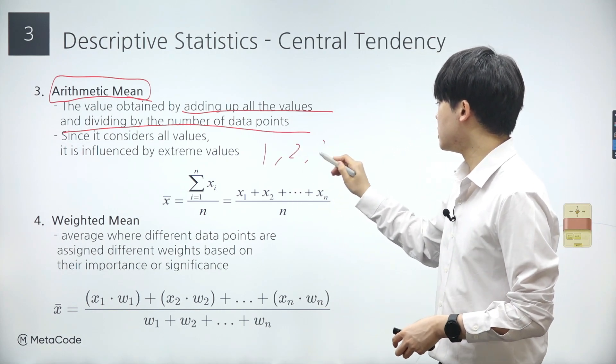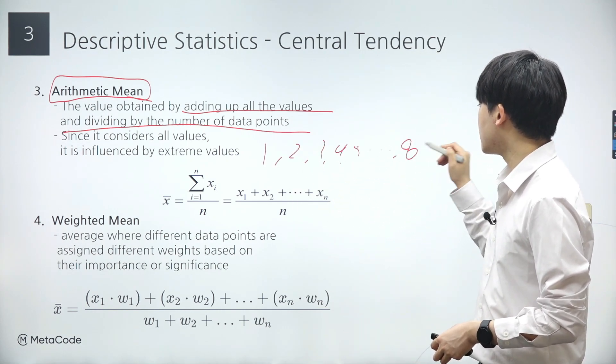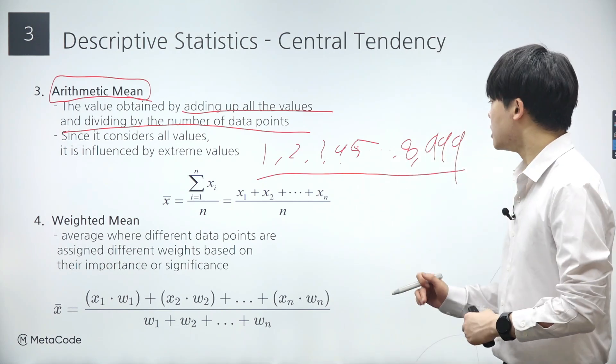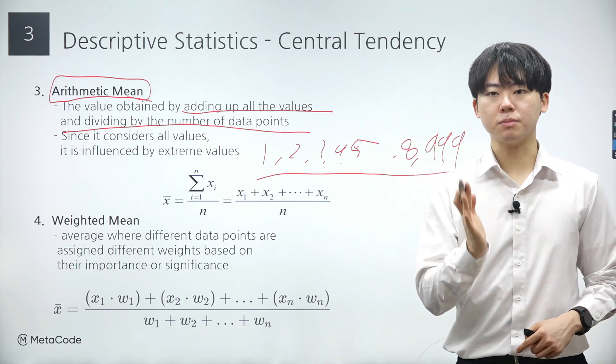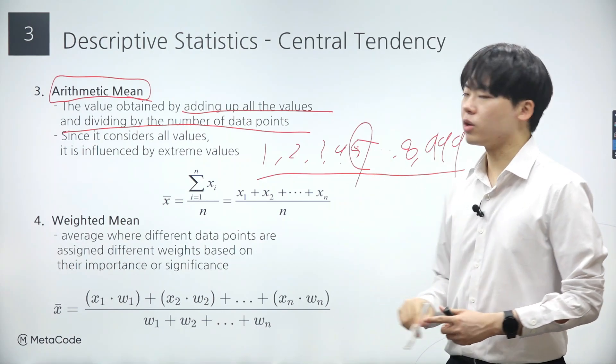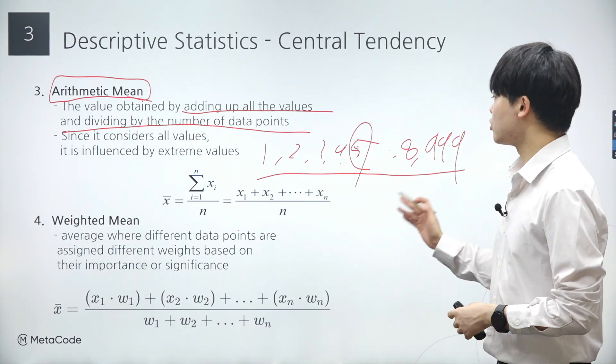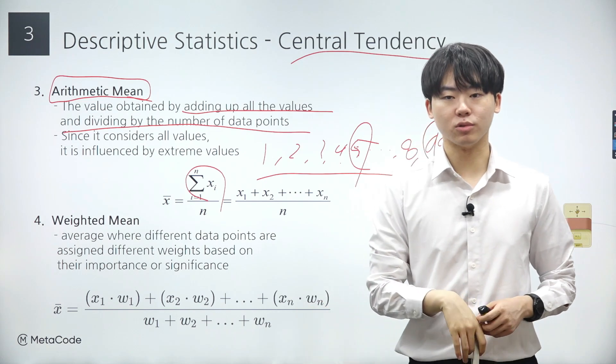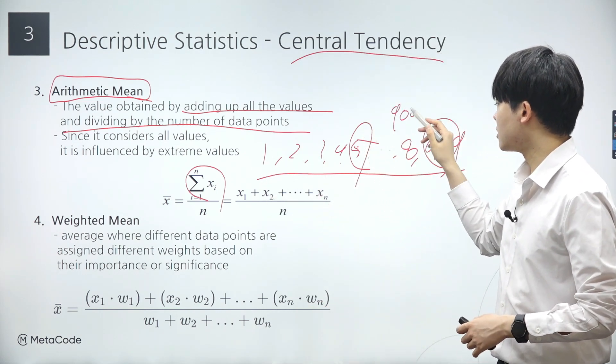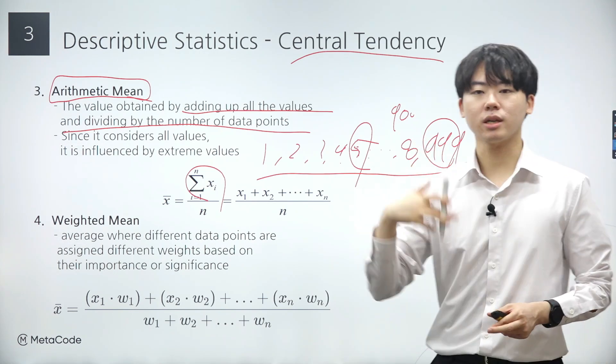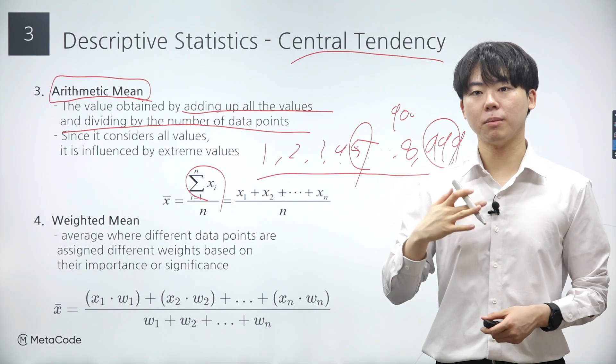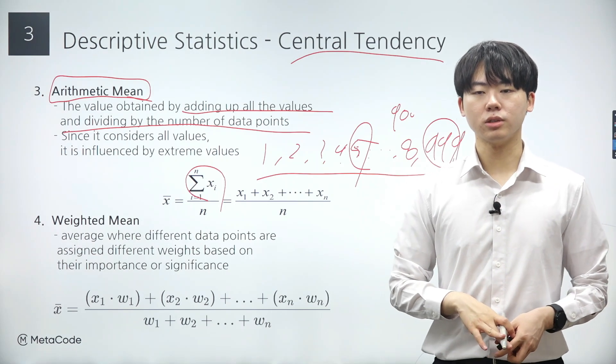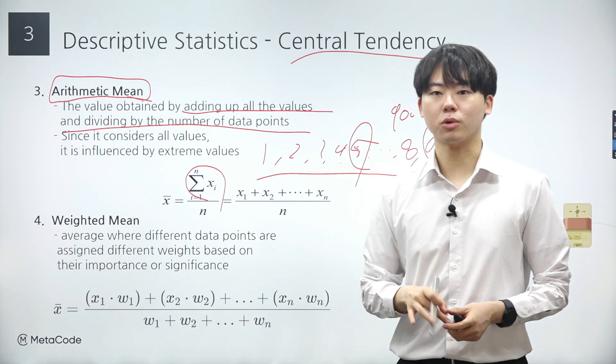For example, suppose we have natural numbers from 1 to 8, with one large value 999. In this scenario, it is evident that 5 represents the central tendency of the data set, as it is the number located at the center. However, when we calculate the central tendency using the arithmetic mean, the extreme value of 999 significantly influences the summation in the mean calculation, resulting in a mean value around 100. Consequently, the arithmetic mean of the data set is too large to accurately represent its central tendency. This is one of the limitations of the arithmetic mean. To mitigate this issue, we can use a trimmed mean which calculates the mean without including extreme values.